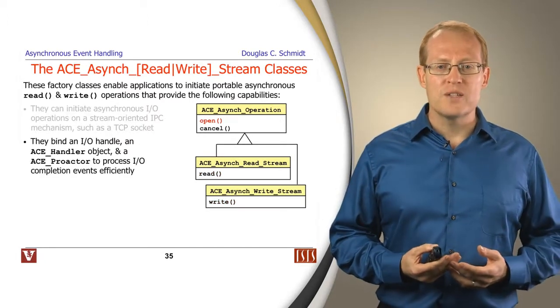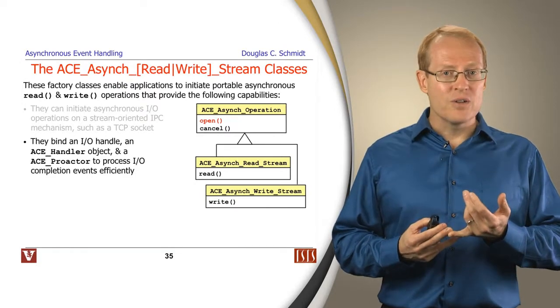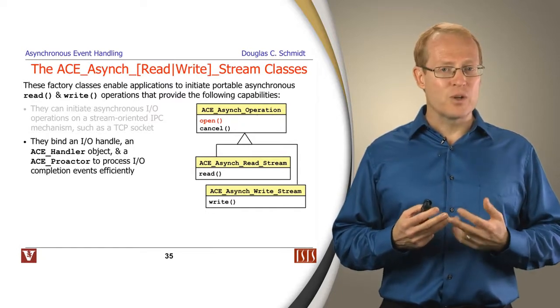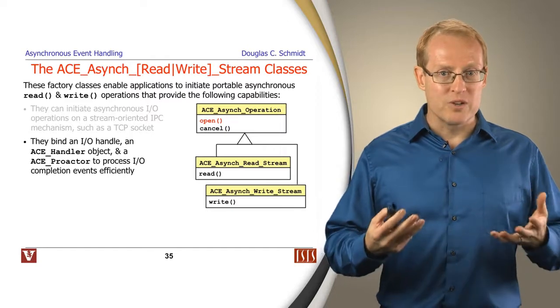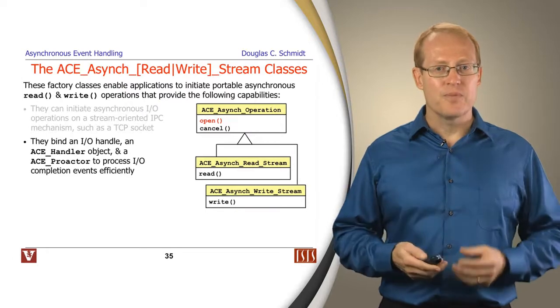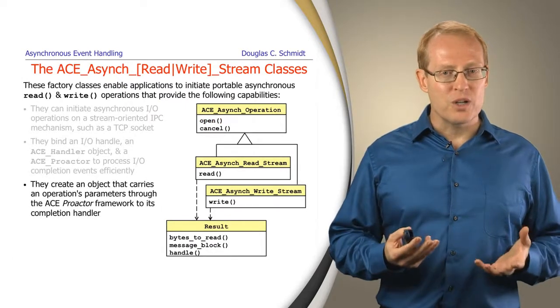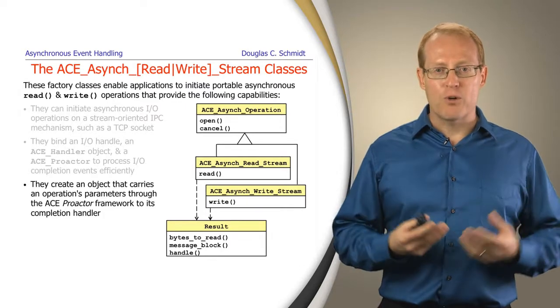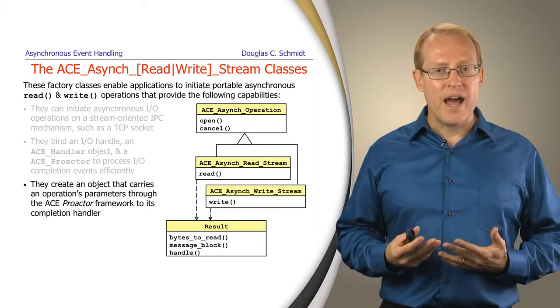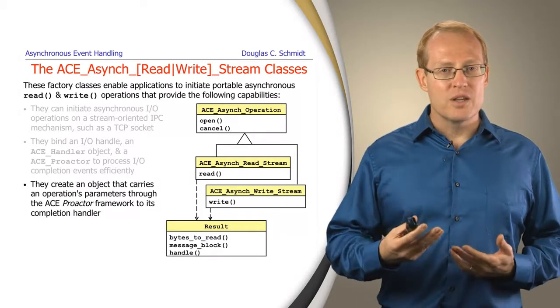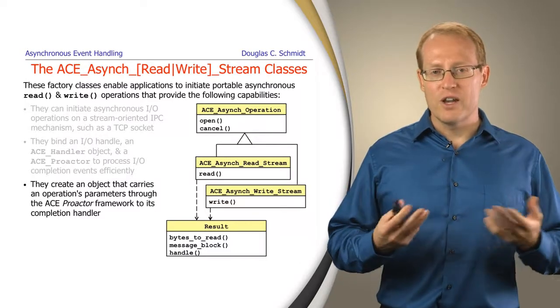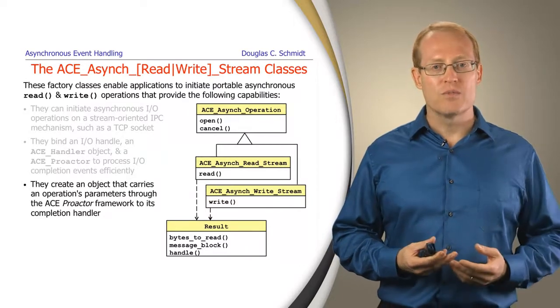You can also bind an I/O handle, an ACE handler object used to get the completion results back, and an ACE ProActor, which keeps track of who's going to demultiplex the results. They're all bundled together. It will also internally create an object that can keep track of all the parameters associated with the asynchronous operation. When the operation is done, those parameters come back to the completion handler and can be used to figure out what to do next, whether things succeeded or failed, whether there are issues with respect to how much data you read or sent.